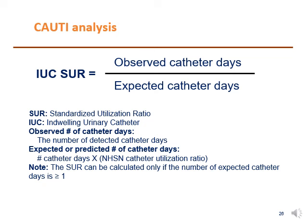The indwelling urinary catheter standardized utilization ratio follows the same steps: divide observed catheter days by expected catheter days. This ratio can only be calculated if the number of expected catheter days is equal to or more than 1. Similarly, the KAUTI standardized infection ratio can only be calculated if the number of expected KAUTI events is 1 or more.